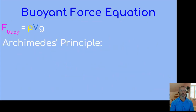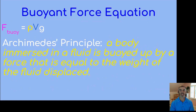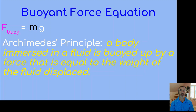Coming back to Archimedes' principle — it says the buoyant force is equal to the weight of the fluid that is displaced. We have the density of the fluid and the volume of the fluid displaced. Density times volume gives us the mass of the fluid displaced, and m times g is the weight. So the buoyant force is actually just the weight of the fluid that's displaced.